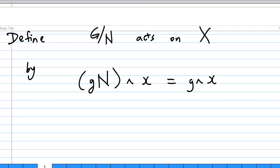Now, the definition of the group action is G by N acts on X. Take any element in G by N, say gN, acts on x, and this is equal to g^x.